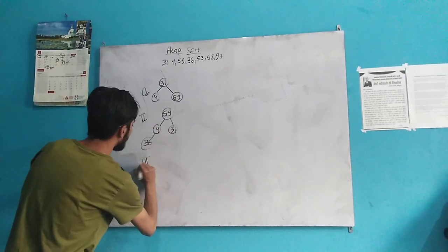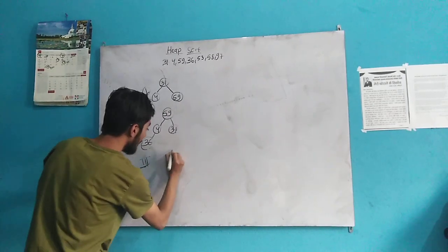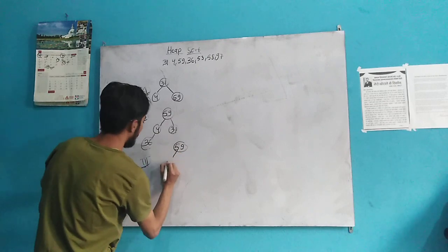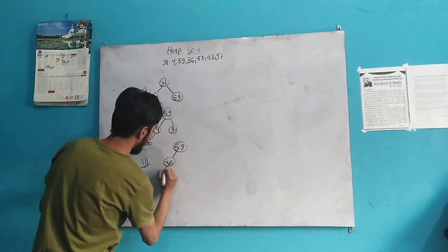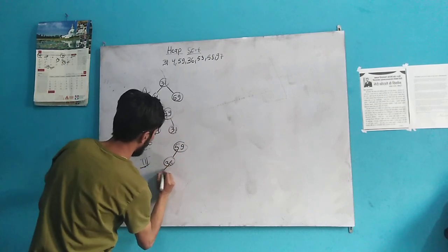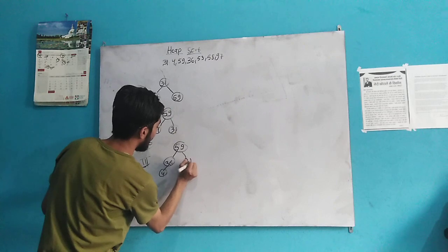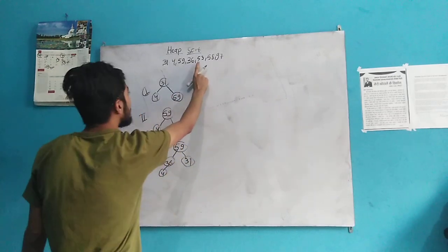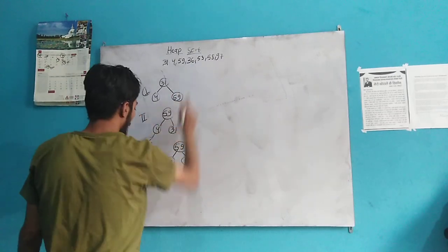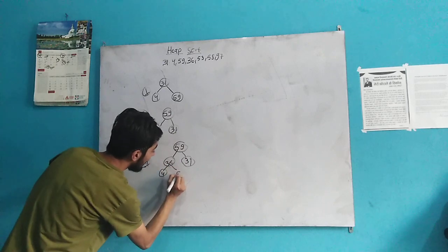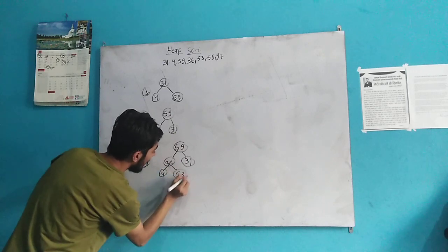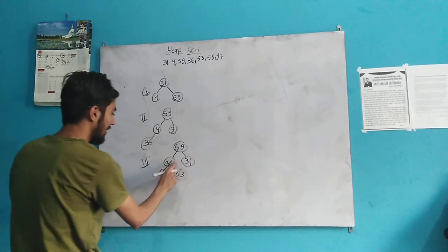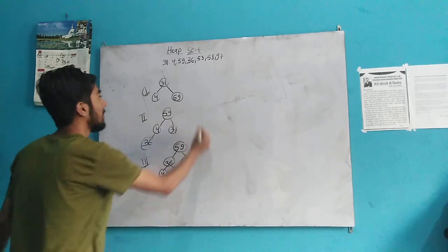In the third step, what happens is: 59, 36, 4, and here was 31. Now the next element is 53. Where do we place it? We place 53 here. Now 53 becomes greater than 36, so we again need to swap this.